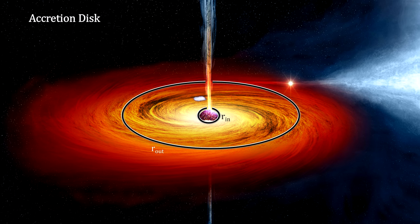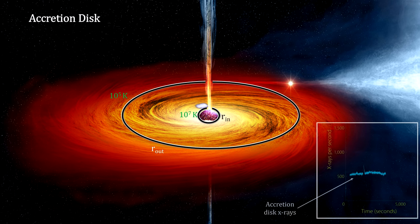In addition to slowing the gas down, this friction causes the gas to heat up. The more massive the central object, the hotter the inflowing matter becomes. For neutron stars and black holes, the temperatures reach millions of degrees Kelvin. At these temperatures, the gas emits detectable amounts of X-rays in all directions. When the gas reaches the innermost circular orbit, it crashes onto the surface of the neutron star.